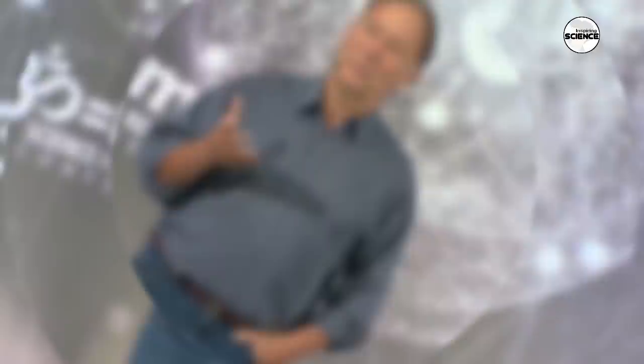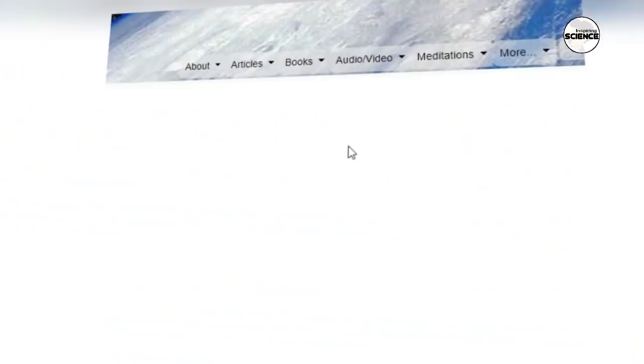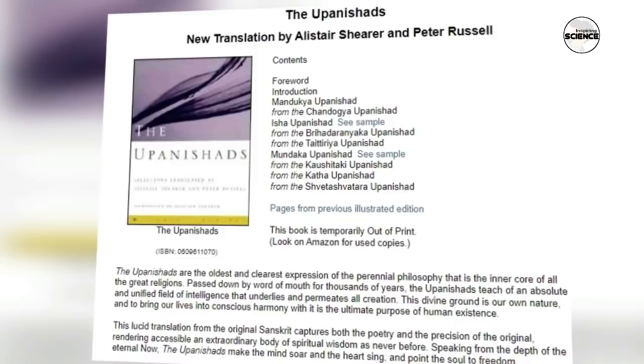Here he studied the Vedas and Upanishads, which greatly impressed him and helped him find answers to his unsolved scientific questions. He found answers to all these questions from the Vedas and Upanishads of Sanatan Dharma. After this, he wrote a book to spread the invaluable knowledge hidden in the Upanishads to the world, titled 'The Upanishad', which you can also search on Google. To write this book, he drew knowledge from the oceans of wisdom found in the Mandukya, Chandogya, Isha, and Katha Upanishads.